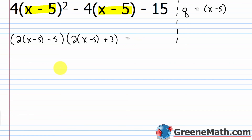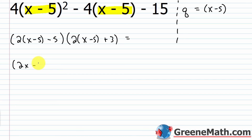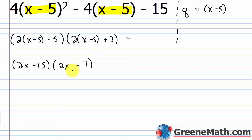Substituting back: the first factor becomes 2 times (x minus 5) minus 5. Simplifying: 2x minus 10 minus 5 equals 2x minus 15. The second factor becomes 2 times (x minus 5) plus 3. Simplifying: 2x minus 10 plus 3 equals 2x minus 7. So I have factored this into the quantity (2x minus 15) times the quantity (2x minus 7).